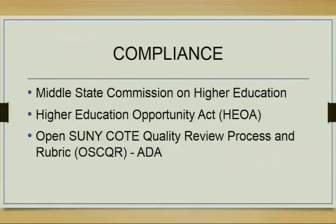Number two was the Higher Education Opportunity Act — this notion around identifying your online students, who they are, identity verification. We require that we have an academic integrity policy in every online course, and every student takes a one-question survey before they can continue. We also require that there's a disability disclosure statement.